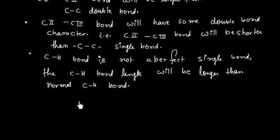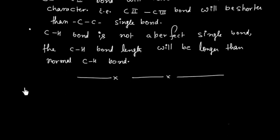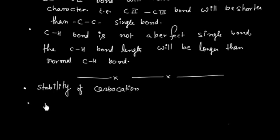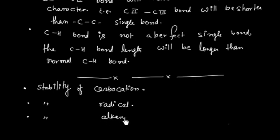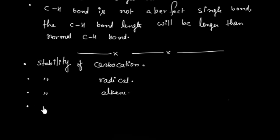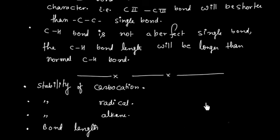To summarize, hyperconjugation can be used to decide: first, the stability of carbocations; second, the stability of radicals; third, the stability of alkenes; and fourth, bond lengths.